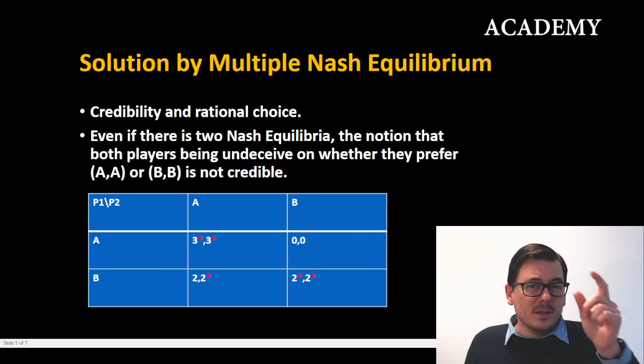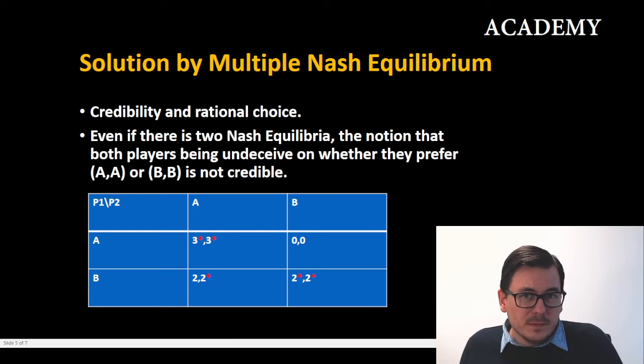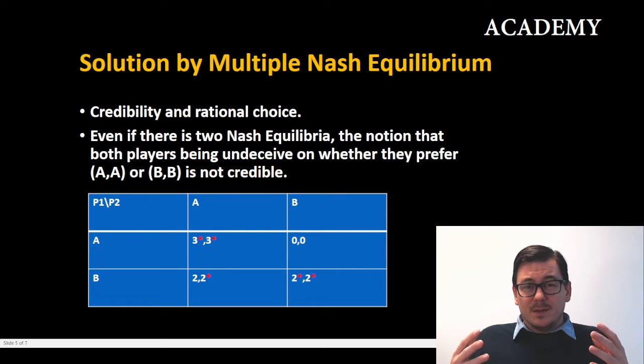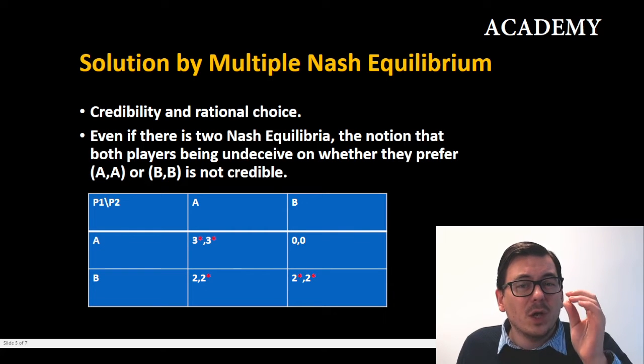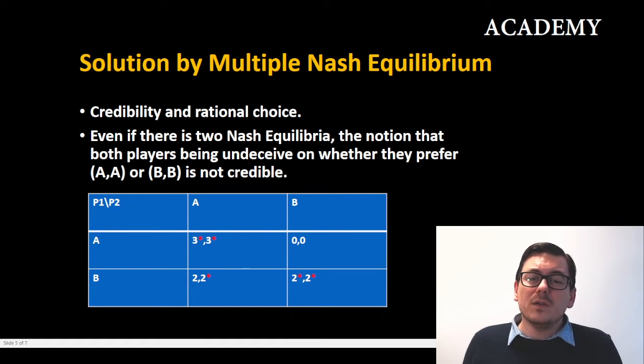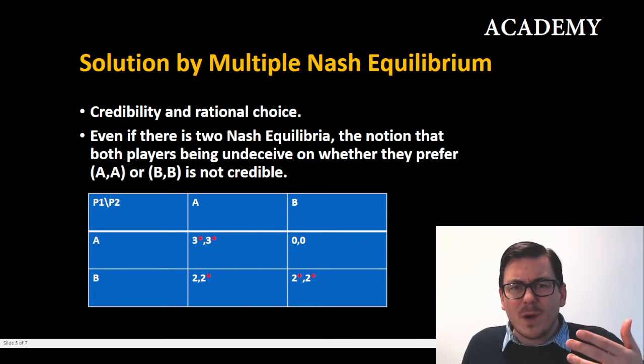And this is why, look at the numbers. So if we would just state that the result of this game would be one of the two Nash equilibrium, well that is correct, but we can come even closer to a specific result looking at the credibility. Because the strategy (B,B) would give each party a payoff of two, well the strategy (A,A) would give each party a payoff of three. So if we take a rational choice view here...